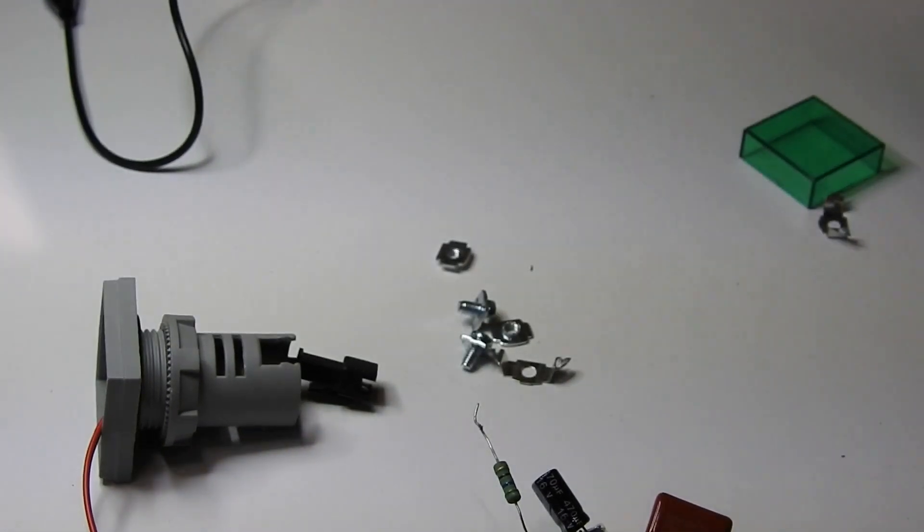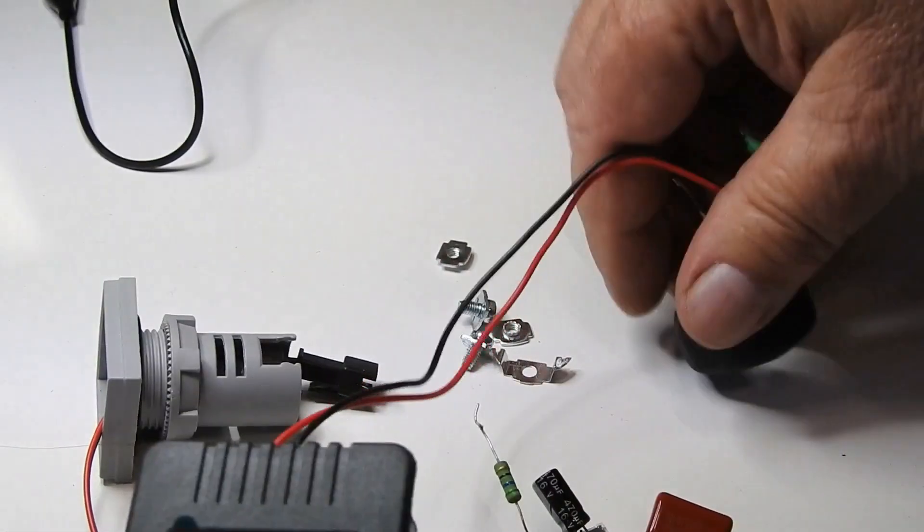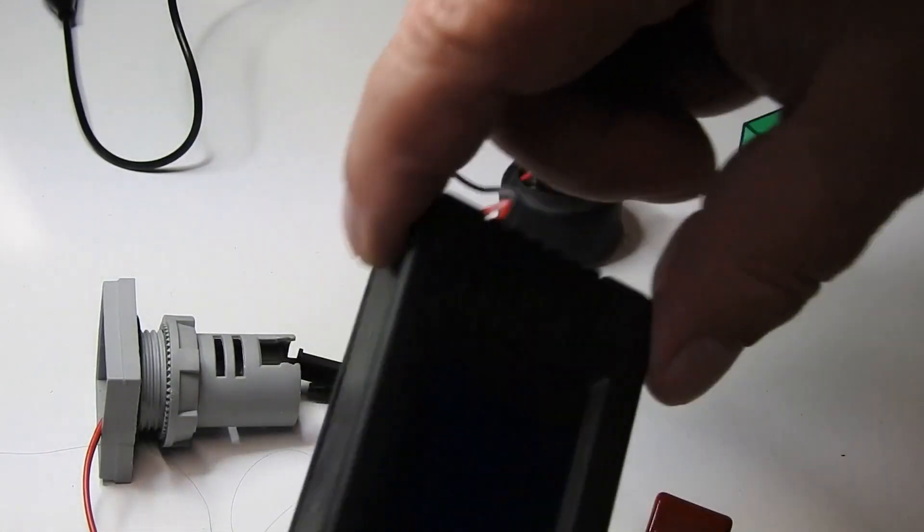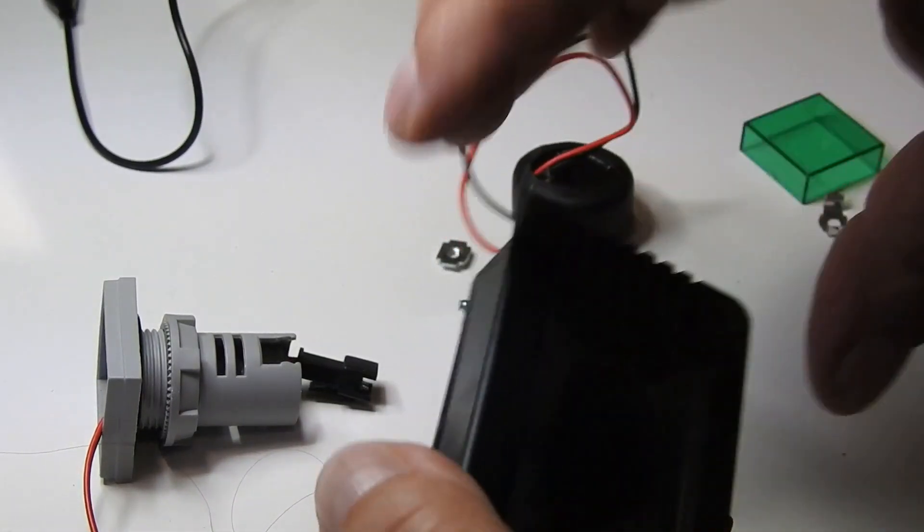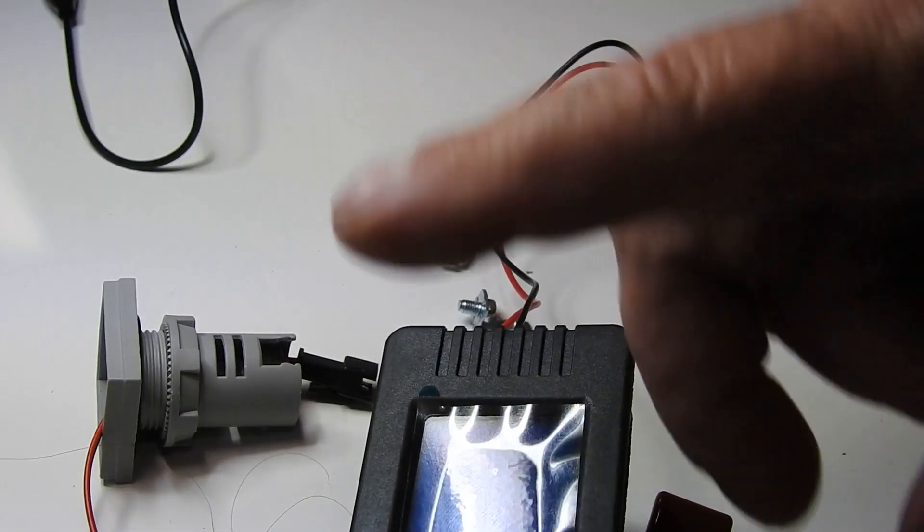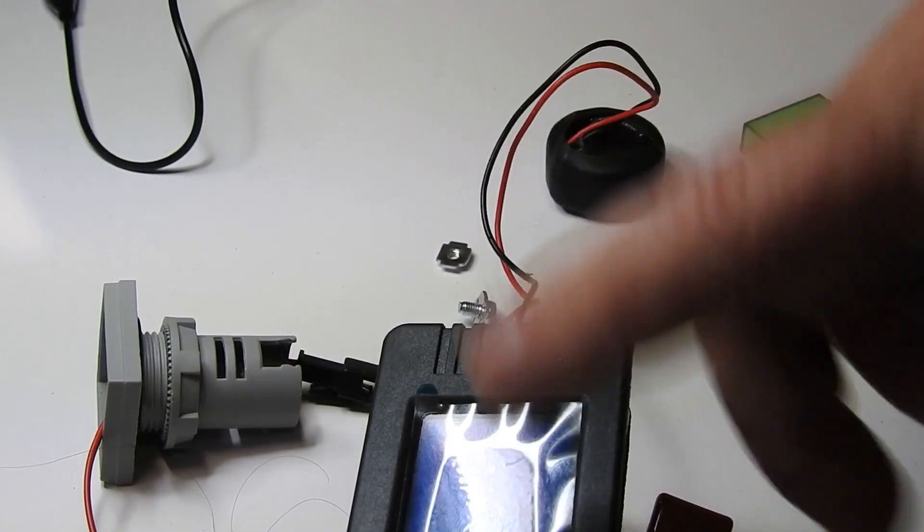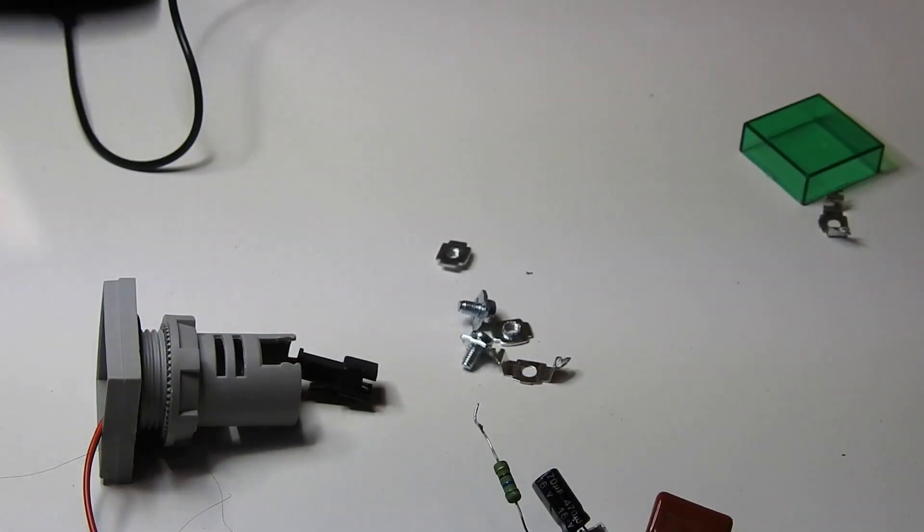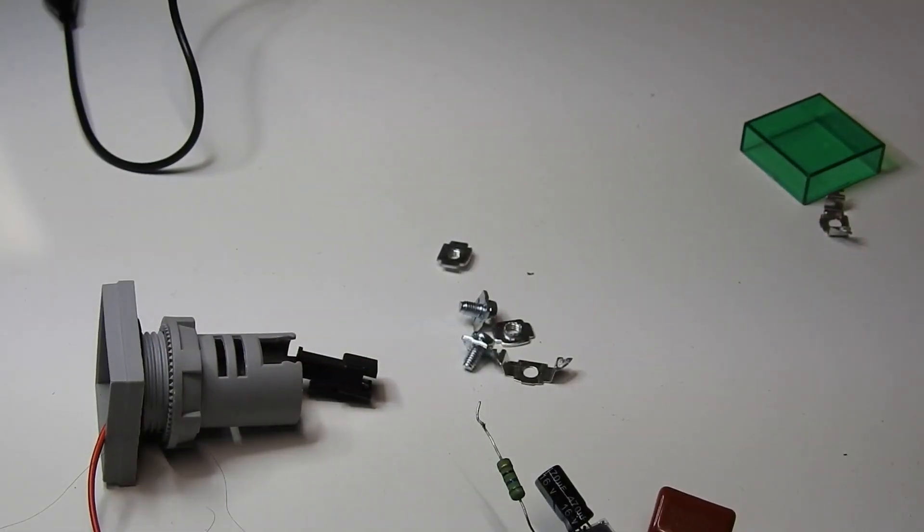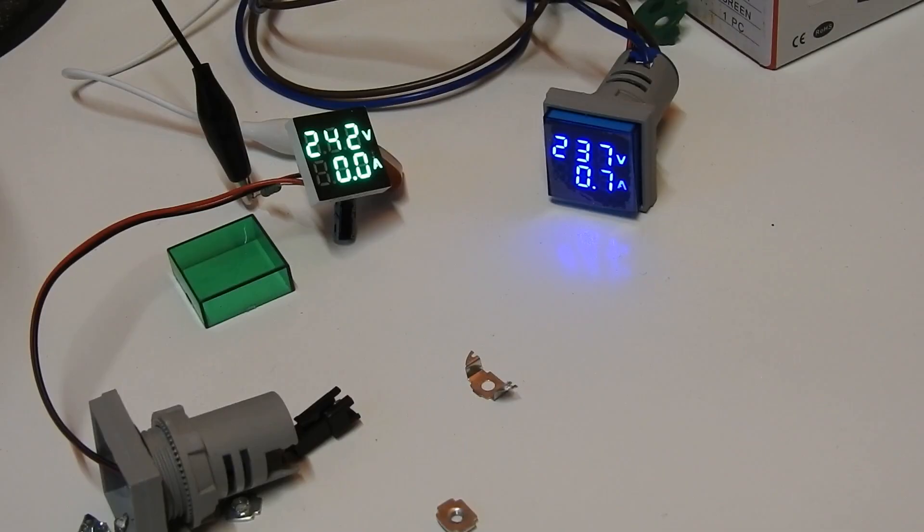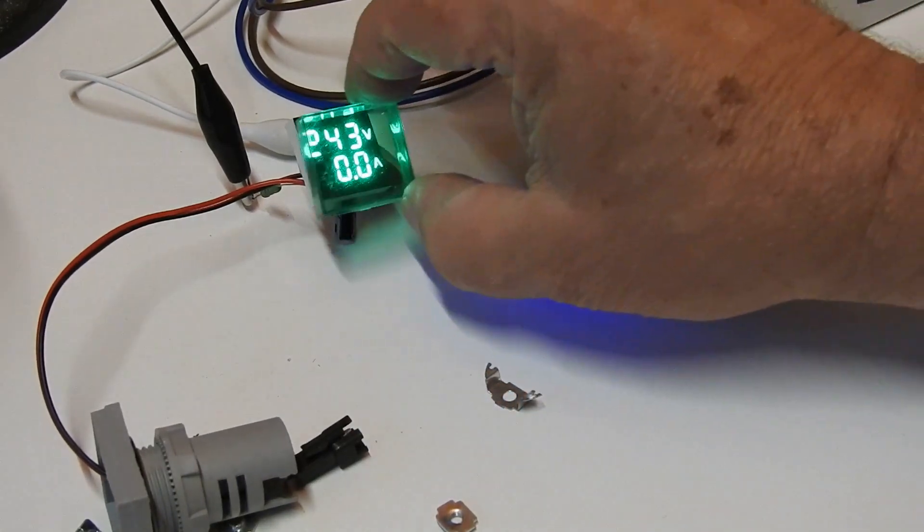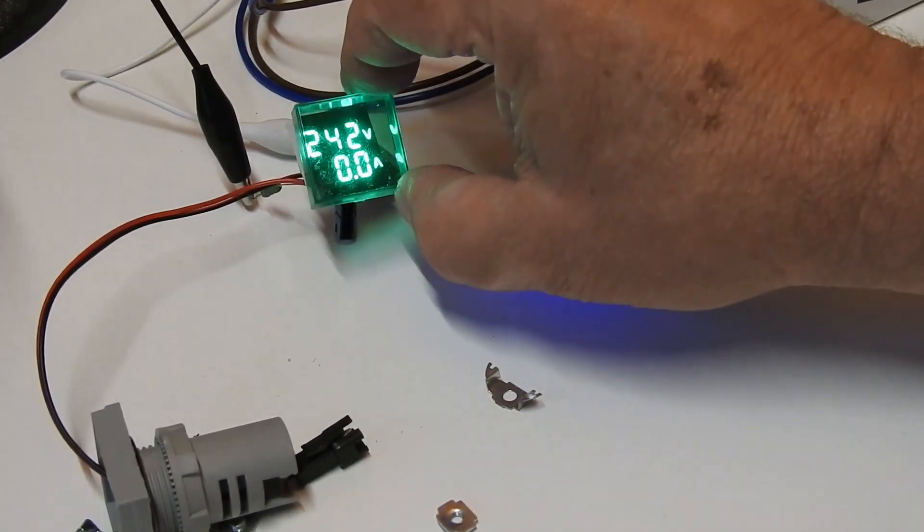I've also got this guy which also uses a current transformer but it does work down to lower currents. And it also shows power, energy and power factor. But then that's three times the price of these things. I'll turn them on again just for fun. So there's this one without the cover over it which improves the contrast a little.